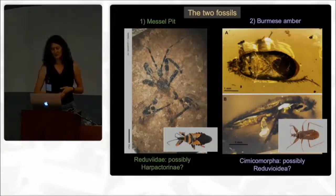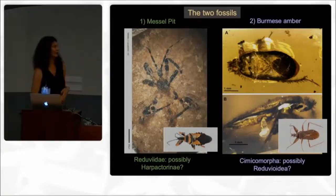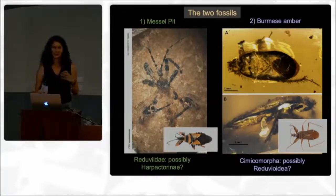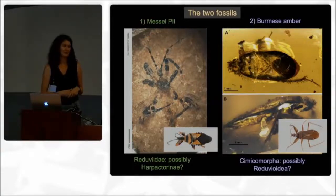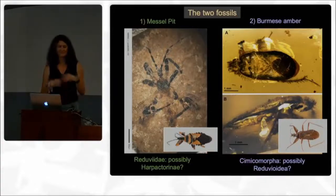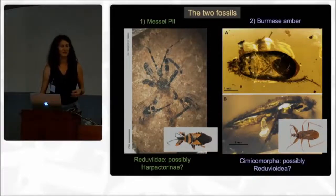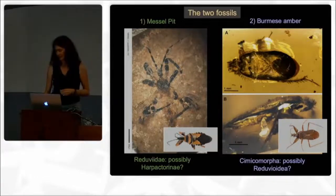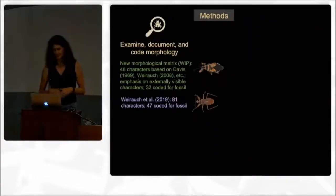The one on the right — we're pretty convinced it's a Ximicomorph and think possibly a Reduvioid, but we weren't quite certain on that either. So we decided to use these two as test cases to figure out whether we can use these combined approaches to more confidently place these fossils.